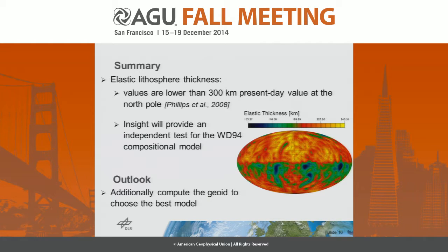What we also plan to do is compute the geoid for all these models in order to have more constraints, and then try to choose the best model representing the surface heat flow variation for Mars.